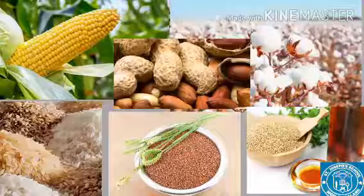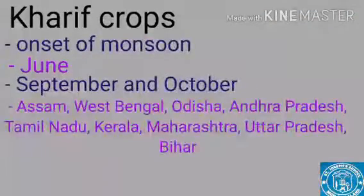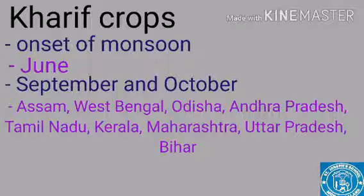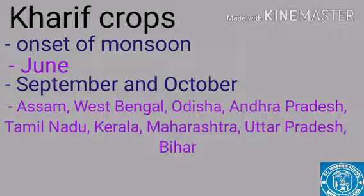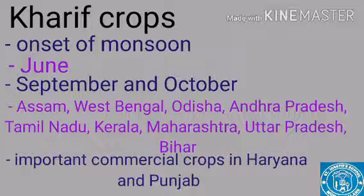The areas where Kharif crops are grown include Assam, West Bengal, Odisha, Andhra Pradesh, Tamil Nadu, Kerala, and Maharashtra. Uttar Pradesh and Bihar are also important rice-growing regions, and rice has become an important commercial crop in Haryana and Punjab.